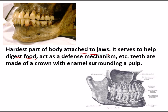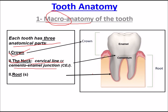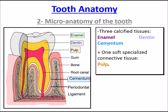Teeth are basically made up of a crown and enamel surrounding a pulp. For tooth anatomy, we will study micro anatomy and macro anatomy. Macro anatomy consists of three parts: first is the crown, second is the junction between crown and root — that is the cervical line or cemento-enamel junction — and third is the root.